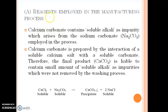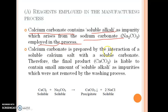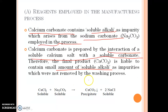First one is reagents employed in the manufacturing process. For example, calcium carbonate contains soluble alkali as impurity arising from the sodium carbonate employed in the process. Calcium carbonate is prepared by the interaction of a soluble calcium salt with a soluble carbonate. Therefore, the final product is liable to contain a small amount of soluble alkali as impurities which were not removed by the washing process — calcium chloride reacts with sodium carbonate to give calcium carbonate as a precipitate and sodium chloride in solubilized form.